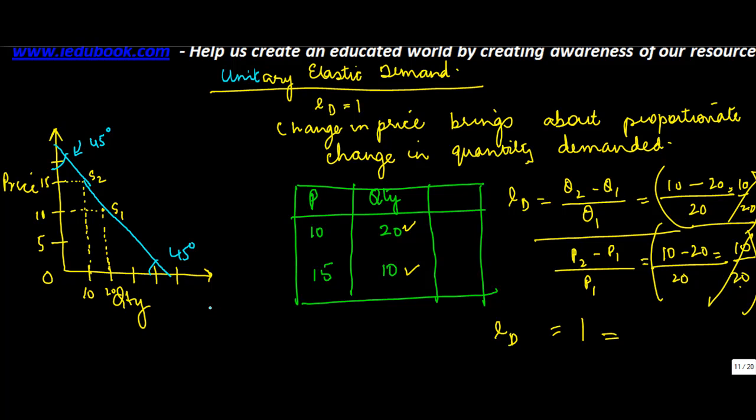So what does this show? This shows that as the price increased from 10 to 15, the quantity demanded decreased from Q1 to Q2, which is 20 to 10. So the change was proportionate.